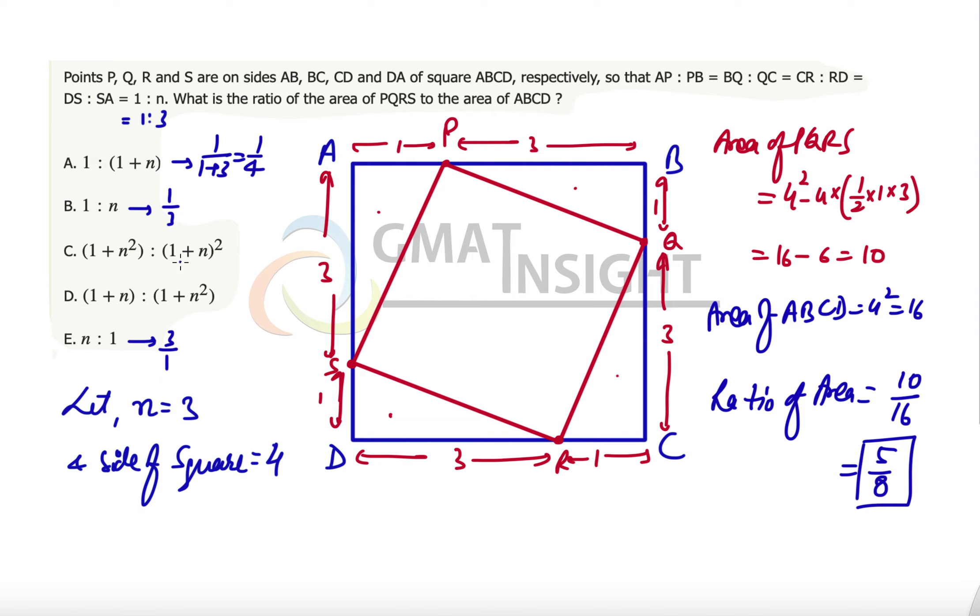So next, C and D options. Let's quickly do the calculation. 1 plus n squared, that means 1 plus 3 squared. 3 squared is 9, so we have 10 in the numerator. And 1 plus n whole squared, that means 1 plus 3 is 4, 4 squared is 16. That's exactly what we have here. So C option is our correct answer.